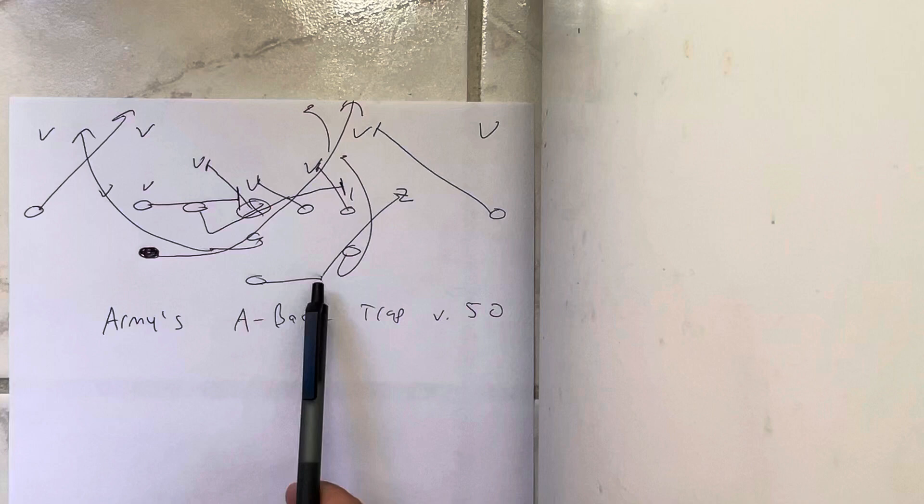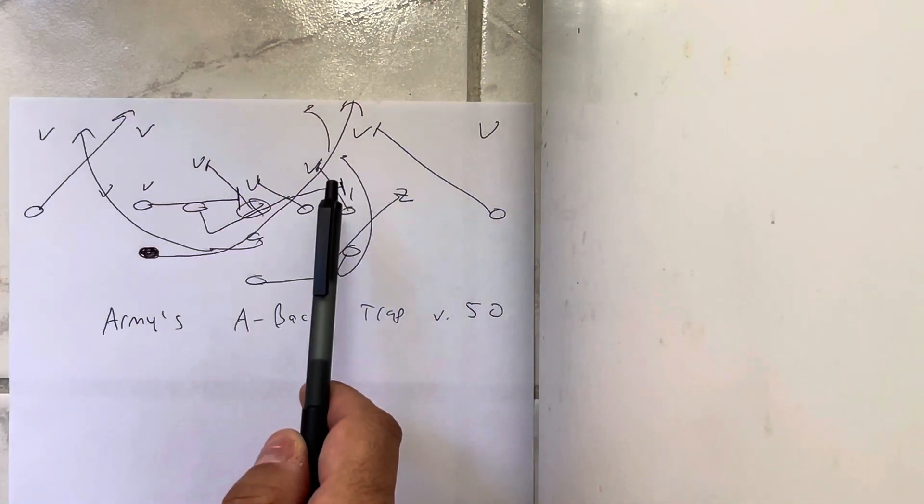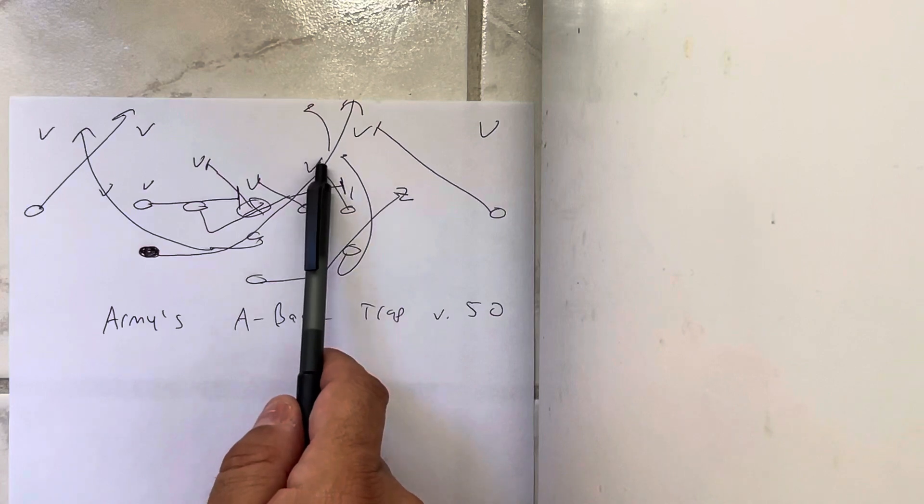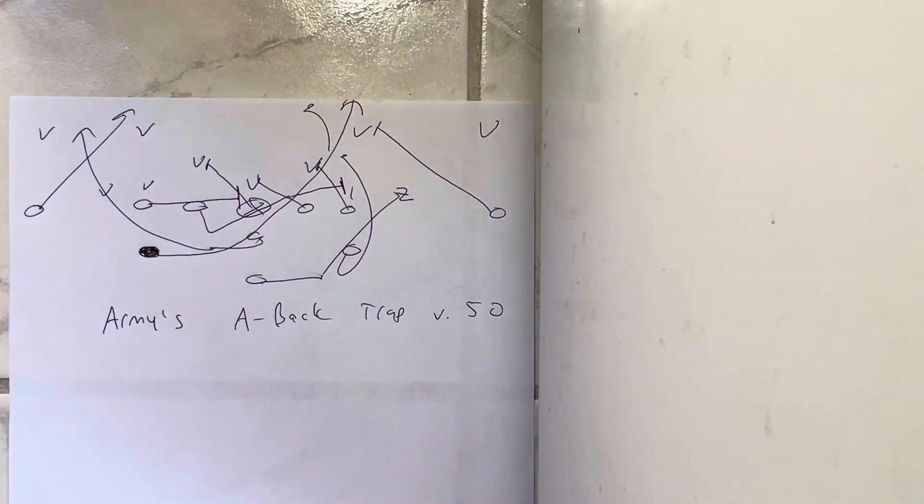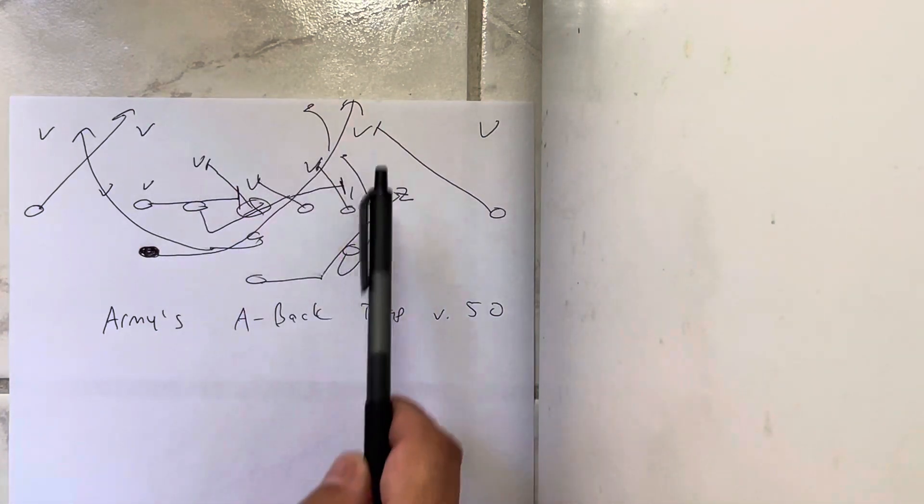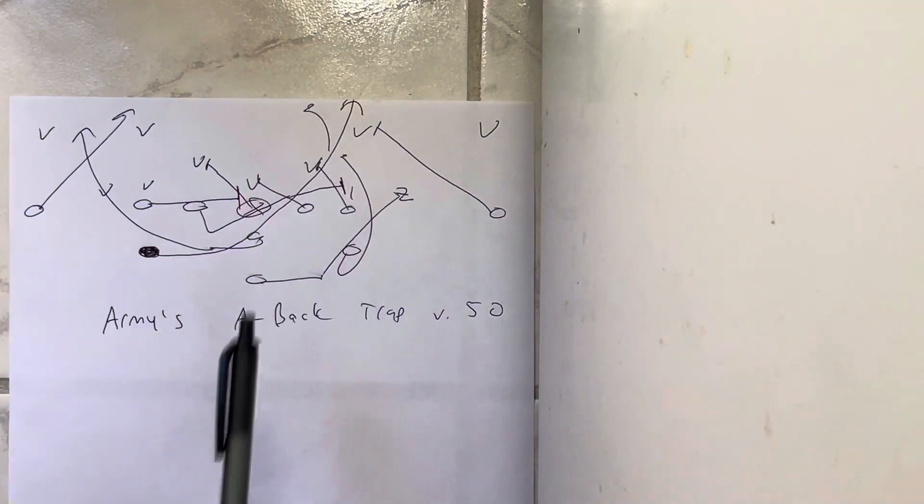The A-back is going to twirl, and he is going to block the second-placed linebacker. If there's only one, he'll block that player to the free safety. So if this player is canceled, he'll end up on the safety. If this player gets over the top of the tackle, he'll block him, and then the tackle will veer to the safety.